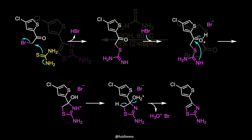A possible mechanism starts with nucleophilic substitution of the alpha-halo ketone. The sulfur attacks the alpha-carbon of the ketone, displacing the halide. The resulting isothiourea attacks the carbonyl carbon, giving a five-membered ring. Finally, a molecule of water is eliminated and the thiazole is formed.